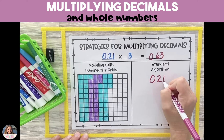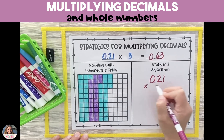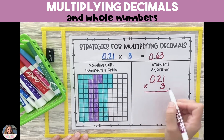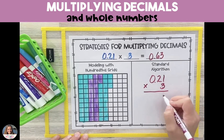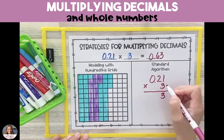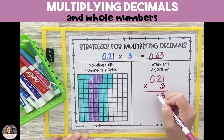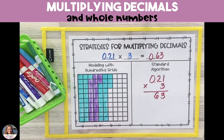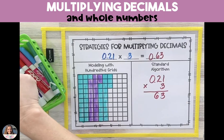We're going to multiply each place value one at a time. Once you've multiplied both factors and you get your answer, we're going to count every digit that is to the right of a decimal point in the problem.